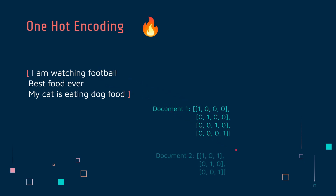Now, what about document two? You see that the dimensions of this matrix actually shrunk — we have three by three now. This document is 'best food ever'. I actually made a mistake here — this is supposed to be zero, not one. So this should be zero here instead of one. For the rest, it's correct, because there's food here but there's no food at that position.